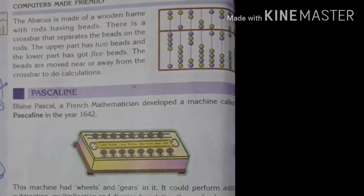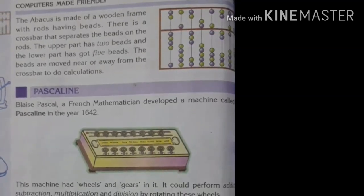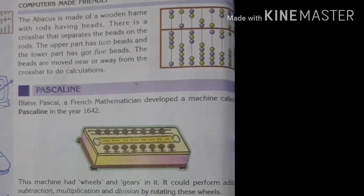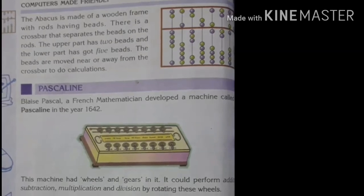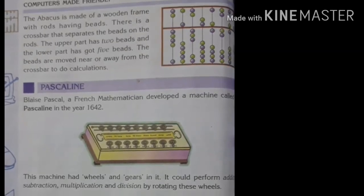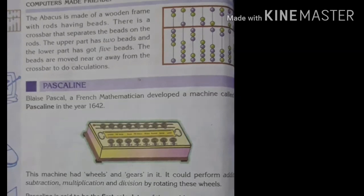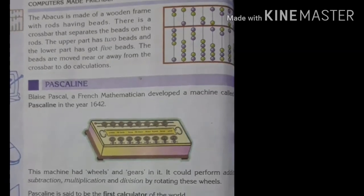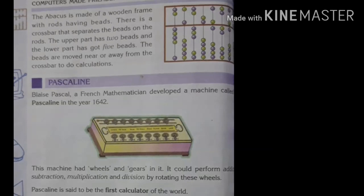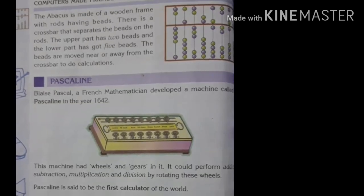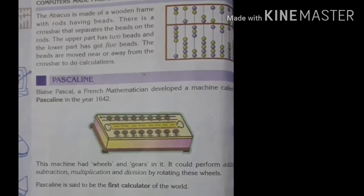Students, the Abacus is made of a wooden frame with rods having beads. There is a crossbar that separates the beads on the rods. The upper part has two beads and the lower part has five beads. The beads are moved near or away from the crossbar to do calculations.